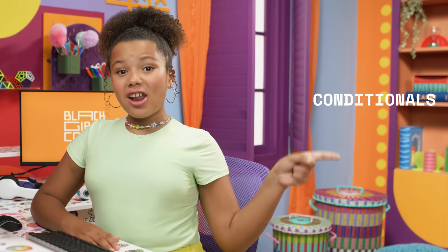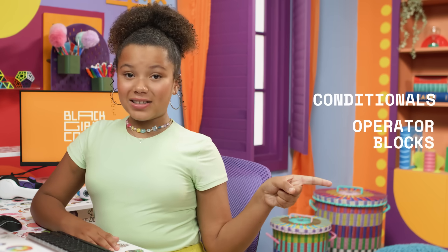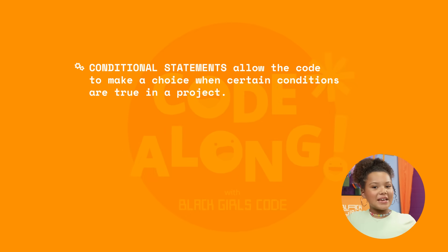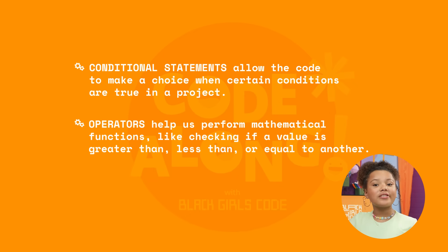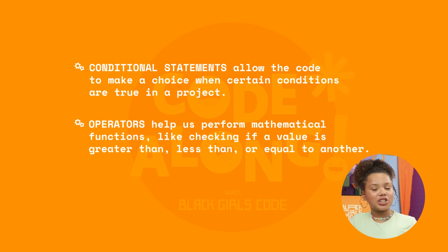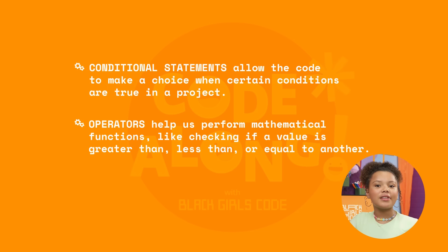In our project today, we're going to use conditional and operator blocks. Conditional statements allow the code to make a choice when a certain condition is true in a project. Operators help us to perform mathematical functions in a project, like checking if a value is greater than, less than, or equal to another.